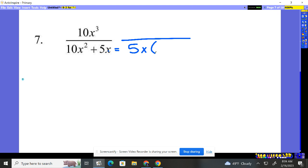5x times what gives us the 10x squared? 5 times 2 gives me the 10 and then an x. x times x is x squared plus 5x times what gives you back the 5x? A 1.